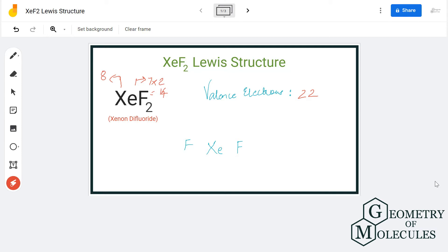So we will place xenon in the center because fluorine is more electronegative than xenon. Fluorine atoms will go on the outside and xenon will come in the center. We will place all the valence electrons around all the atoms like this.